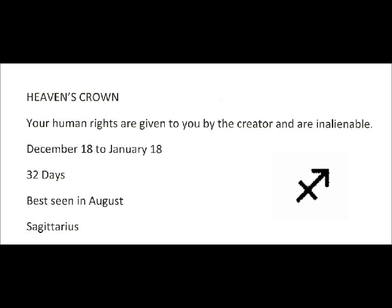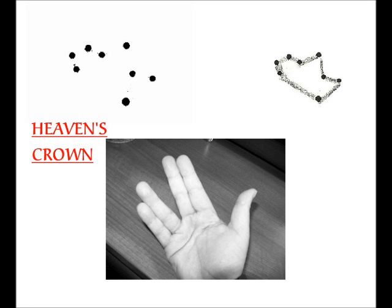We start with Heaven's Crown, the teapot, Sagittarius. Heaven's Crown. Your human rights are given to you by the Creator and are inalienable. December 18th to January 18th. Duration is 32 days. Best seen in August. Formerly known as Sagittarius.